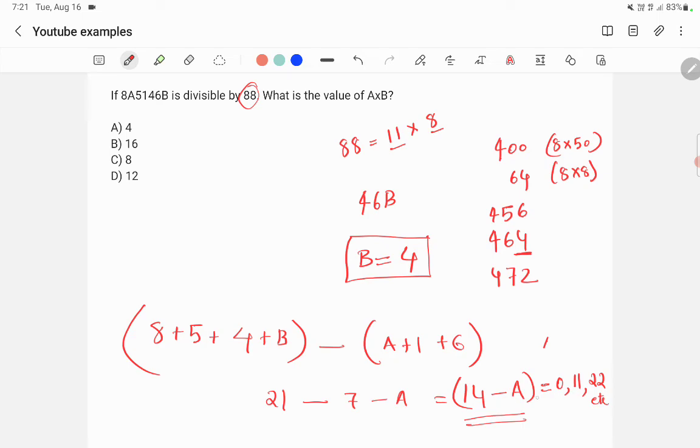So we got a = 3 and b = 4, so a × b = 3 × 4 = 12. Our answer is option D, 12.